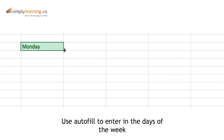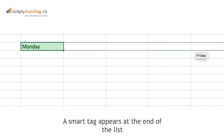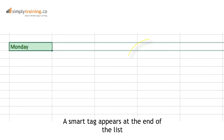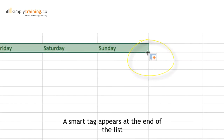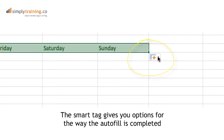I've used Autofill to enter the days of the week. A smart tag — a small plus sign — has appeared at the end of my list. By clicking on this smart tag, it has given me a number of different options for the way the Autofill is completed.